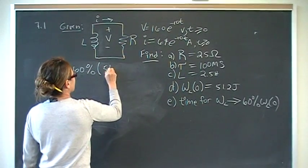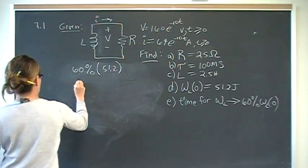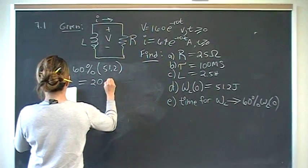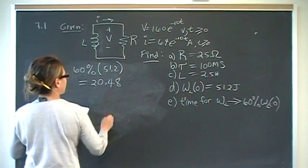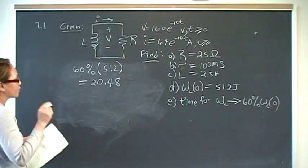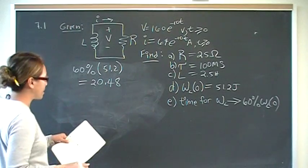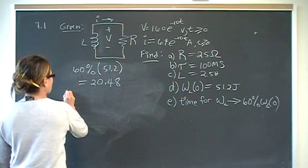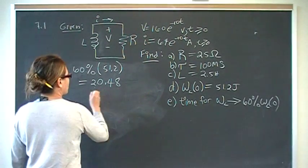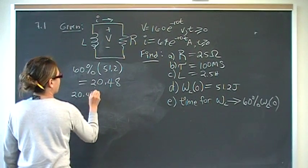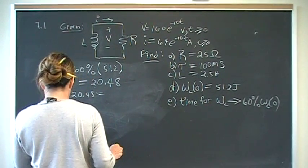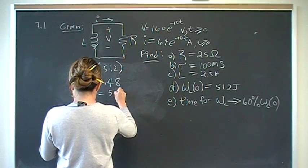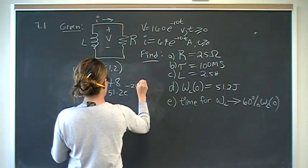Well, when it dissipates 60% of this energy, what's left? We take 60% of 51.2 joules, and that gives us 20.48. That's how many joules is left. That's 40% remaining, is 20.48. So, 20.48, set that equal to the initial, 51.2 e to the negative 20t.